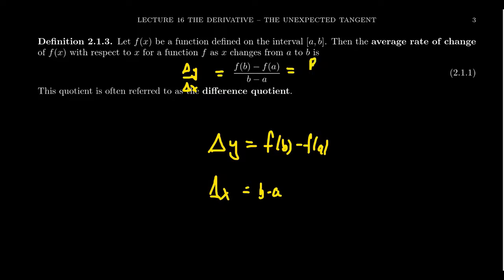Sometimes you might call this rise over run. Rise represents a change in the vertical direction, and run represents a horizontal displacement. Rise over run, as we've seen in geometry, refers to the slope of a line — this is the slope formula. As discussed in the previous video, the average rate of change measures the slope of a secant line of a function. That's all average rate of change is about.